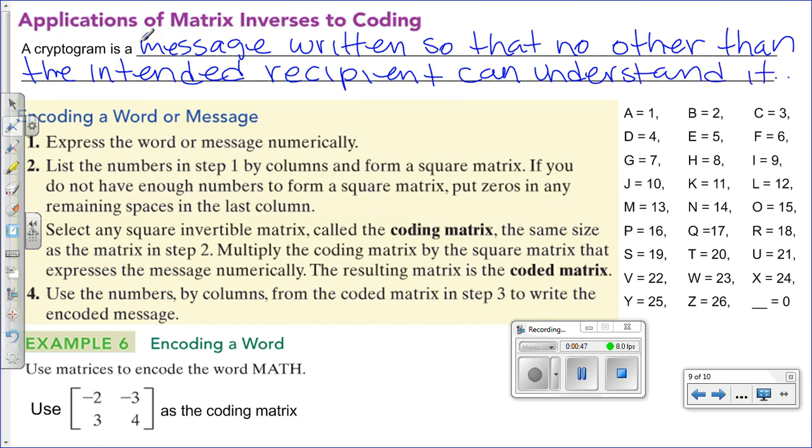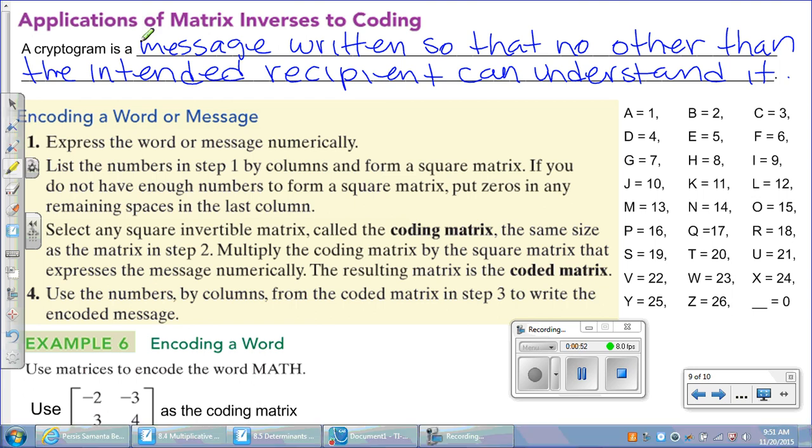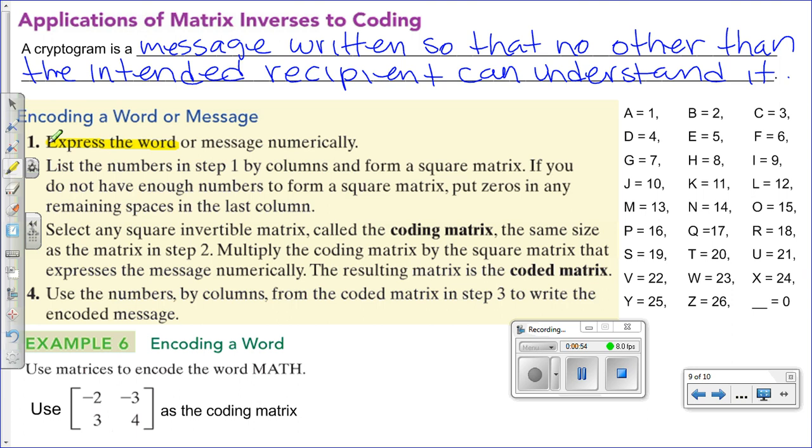Alright, what we're going to do here is express the word that we want to code numerically. List the numbers in step 1 by columns. Here I have the conversion. We're going to use A as 1, B as 2, C as 3, and so on. If you notice, I have a 0, and 0 is going to denote space. Sometimes you can just skip that if you want to.